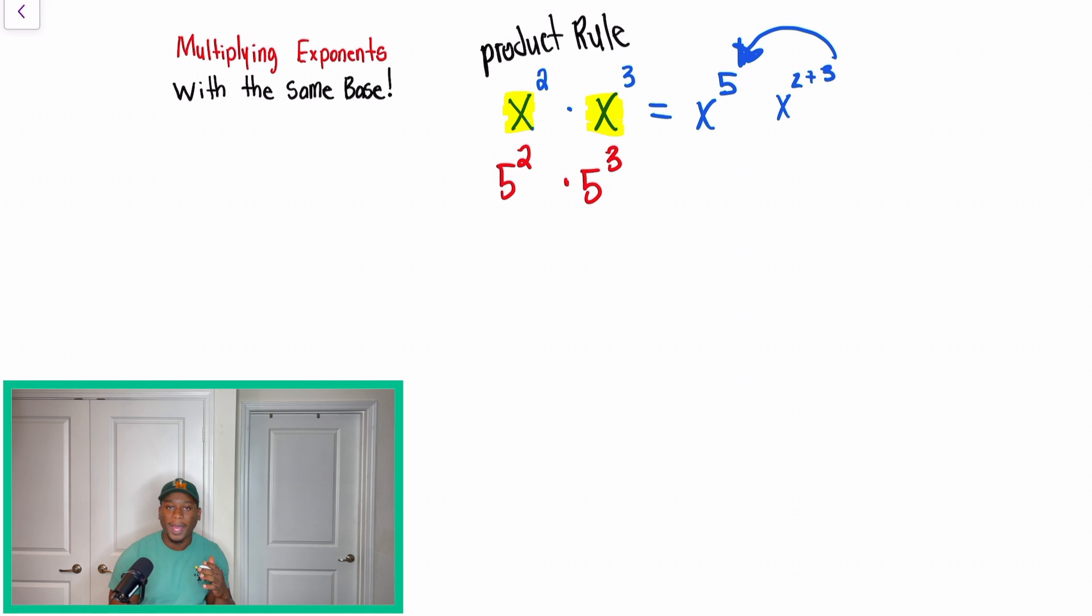And the same rule would apply to five. If we're multiplying five to the second power times five to the third, what we're essentially saying is we're going to do five times five, and we're going to multiply that by five times five times five. And once we look at the base, we could basically abbreviate this. We could make it shorter, guys. That's all it is. Us mathematicians, we're lazy, so we try to shorten things. So when we look here, we took five, and we multiply it by itself five times. So that is why we get the answer five to the fifth power.